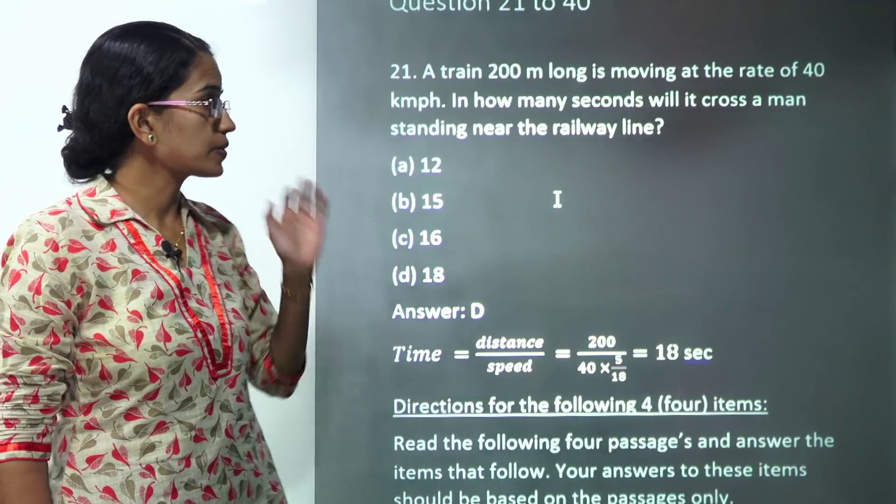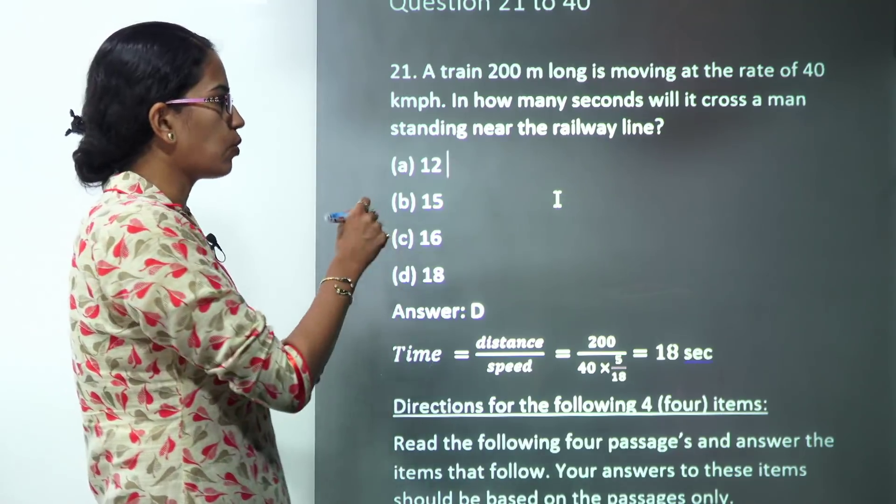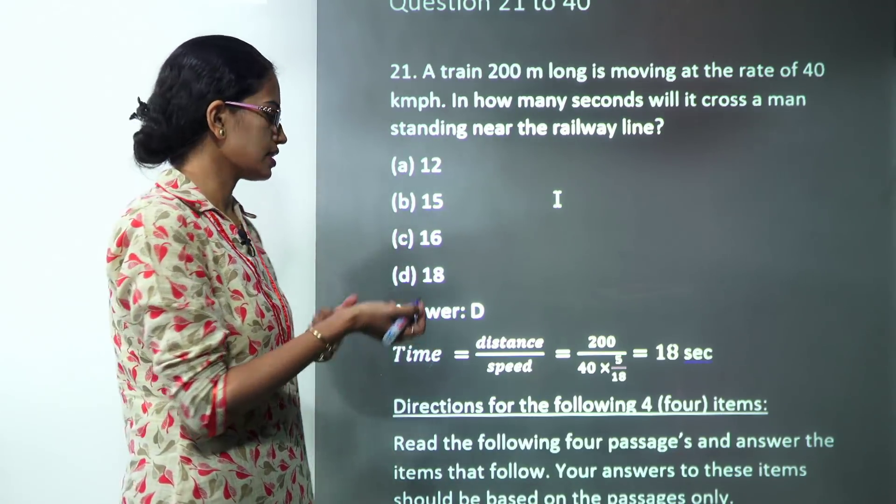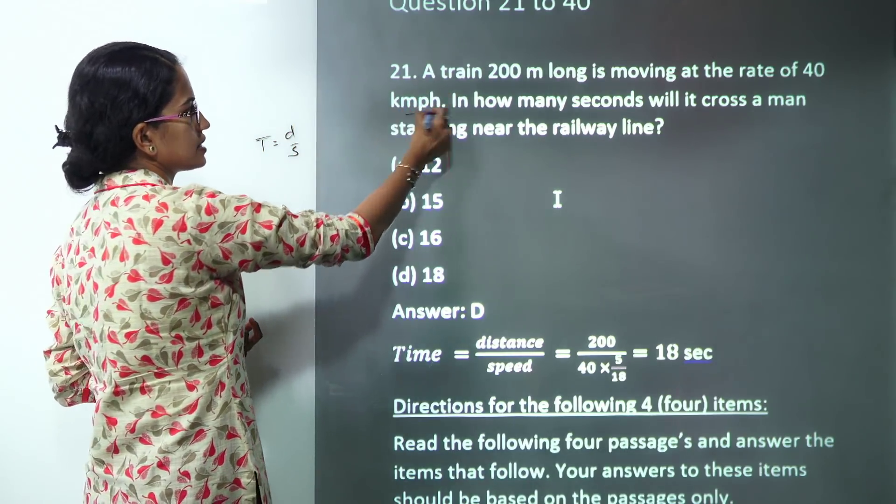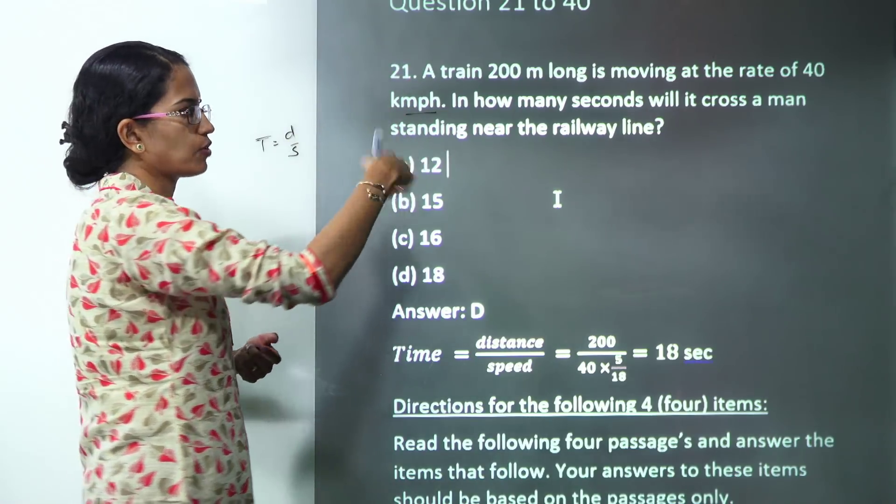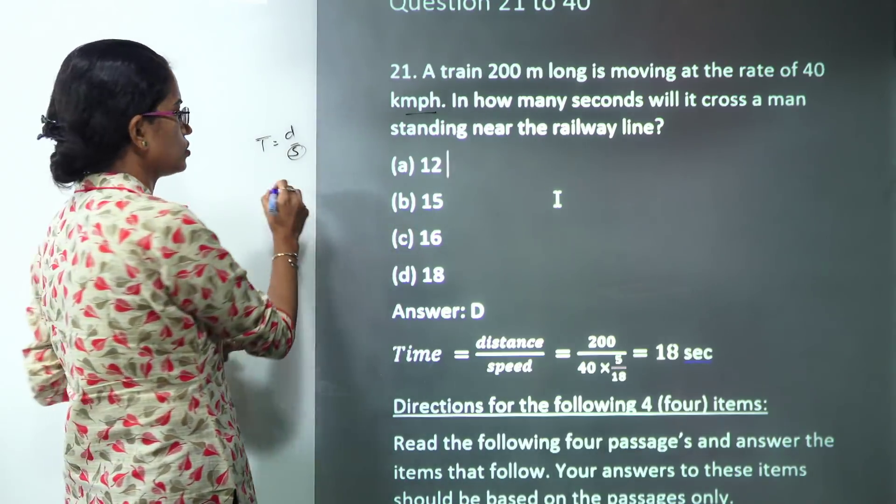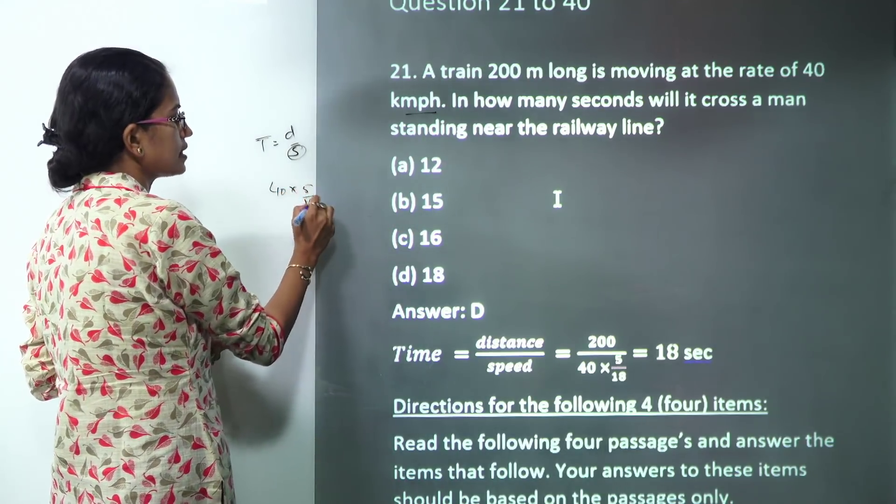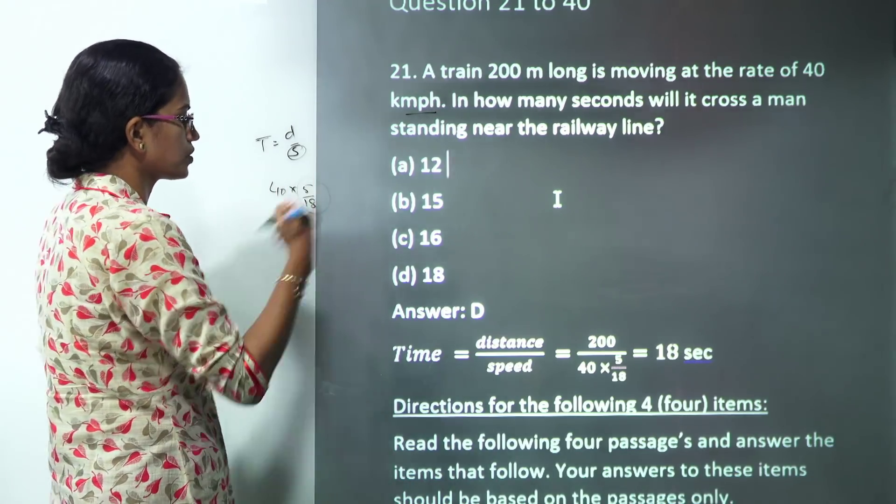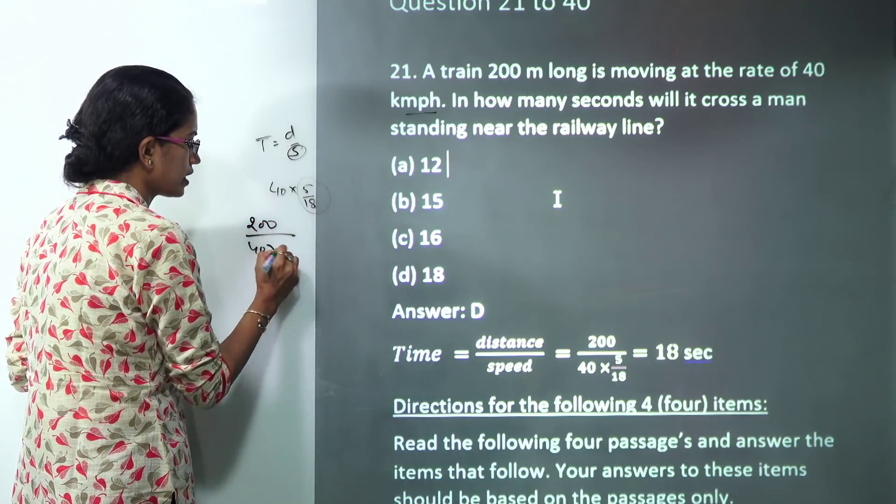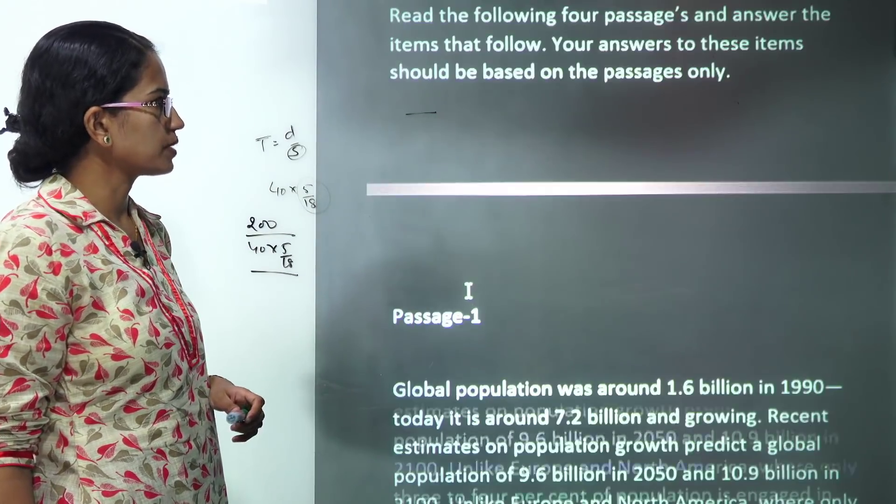The first question talks about a train which is 200 meters long and is moving at a rate of 40 kilometers per hour. This is a simple question where we have to find the time, which would be distance by speed. But the speed is given in kilometer per hour and the length is in meter and what we are asked is in seconds. So we have to convert this speed into meter per second. What we would do is 40 into 5 by 18. So 200 divided by 40 into 5 by 18, and that would be our answer. It would come up to be 18. So the correct answer here would be 18.